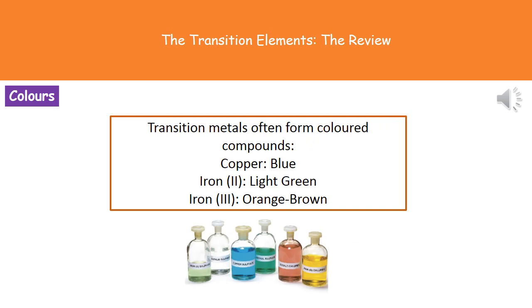When we look at the compounds of these transition metals, they're often quite brightly coloured — in some cases very pretty colours. For our exam, we need to remember three transition metals and the colour of their compounds. Copper forms blue compounds, iron(II) is light green, and iron(III) is orange-brown. Make sure you learn those three colours.